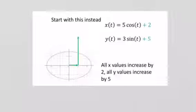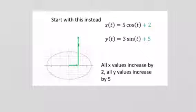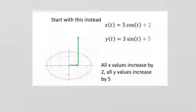Now let's think about what happens if we add 2 to x and add 5 to y. All of the x values will increase by 2, and all of the y values are going to increase by 5. So the center and every single point shifts over 2 and up 5, which just takes the whole ellipse and shifts it over 2 and up 5.